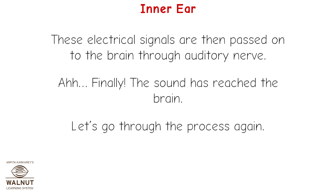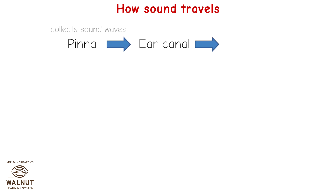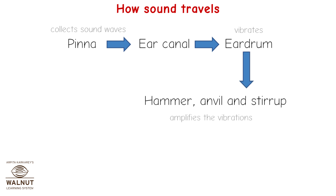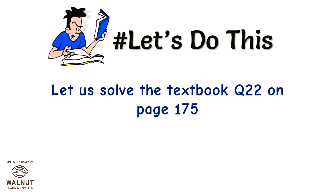Let's go through the process again. The ear collects sound waves through the pinna; waves go through the ear canal and vibrate the eardrum. The hammer, anvil, and stirrup amplify the vibrations. The cochlea converts them into electrical signals, and the signals travel through the auditory nerve to the brain.